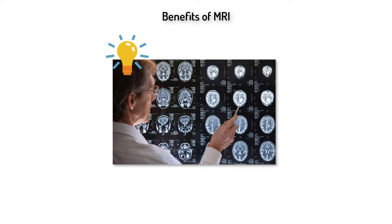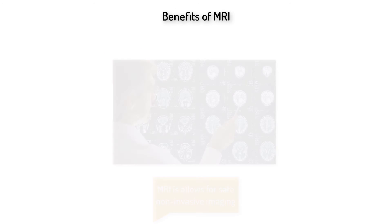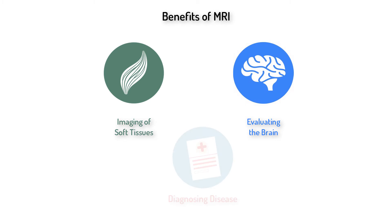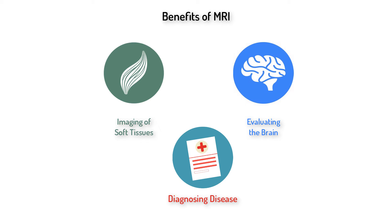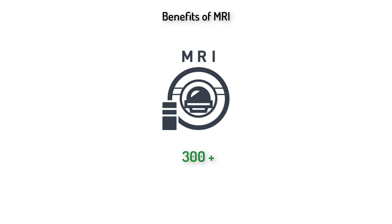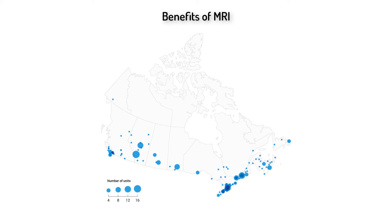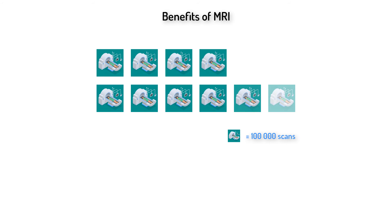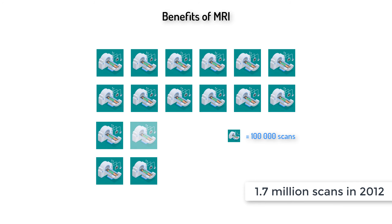MRI technology has provided unprecedented benefits to our understanding of diseases and anatomy by enabling the non-invasive imaging of live patients. It has become a critical tool in researching and understanding the soft tissue of the body, including sensitive areas such as the brain. Additionally, the technology's superior ability to detect abnormalities has proved valuable in diagnosing a broad range of conditions from cancer to vascular disease. Canada's inventory of over 300 MRI units available across each province and one territory reflects the utility and importance of this technology for public health, with Canadians undergoing 1.7 million MRI scans in 2012.